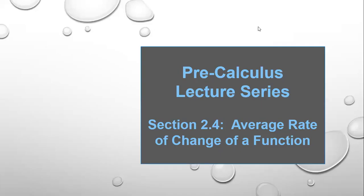Hi, welcome to the pre-calculus lecture series. In this video we're going to talk about section 2.4 and the topic is the average rate of change of a function. This section is a pretty important concept. When you go to calculus, the derivative is defined as the instantaneous rate of change, but how do we get an instantaneous rate of change? We first need to know what is the average rate of change of functions.